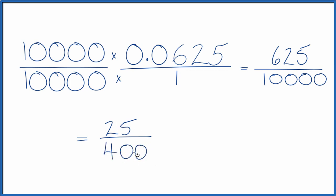It looks like I could divide by 25 again. 25 divided by 25, that's 1. 400 divided by 25 is 16. So we've simplified this down to 1 16th.